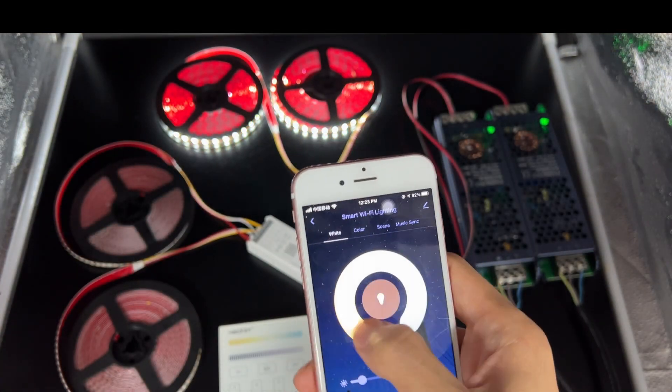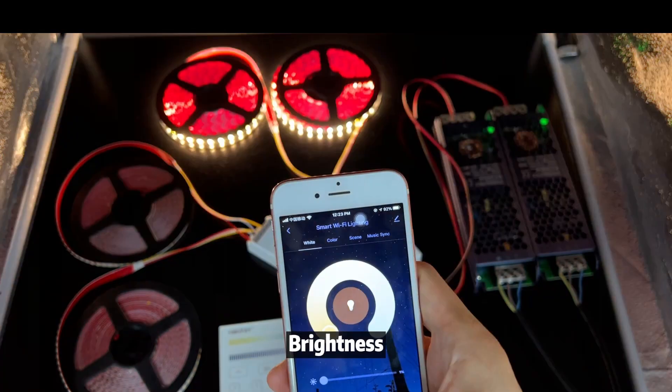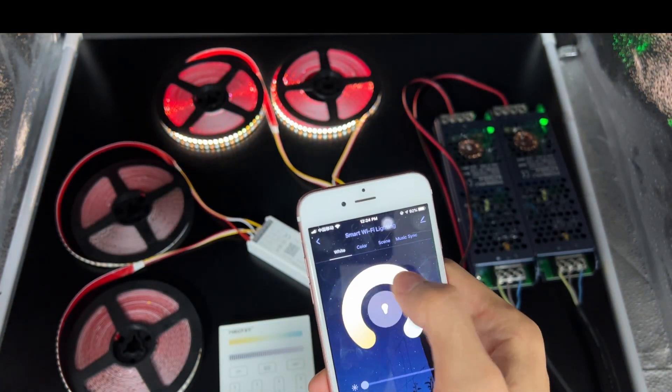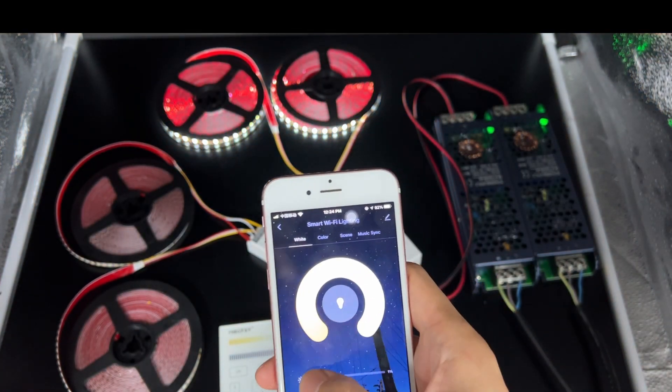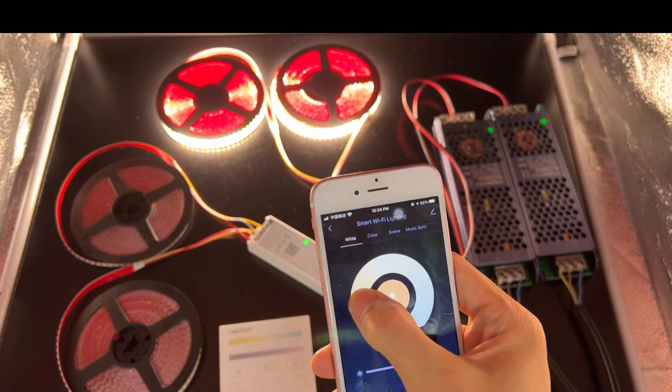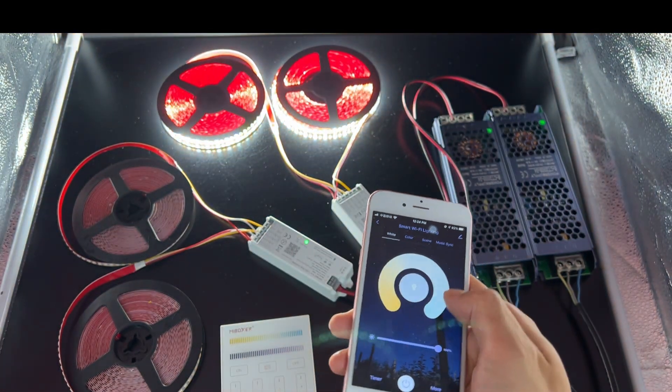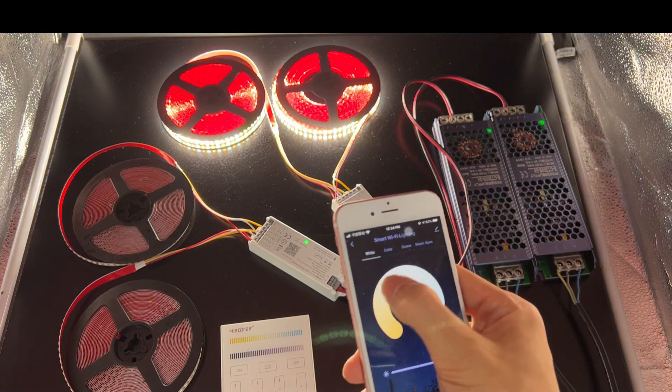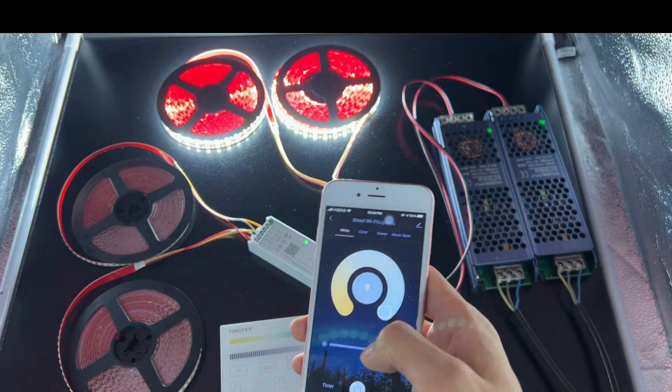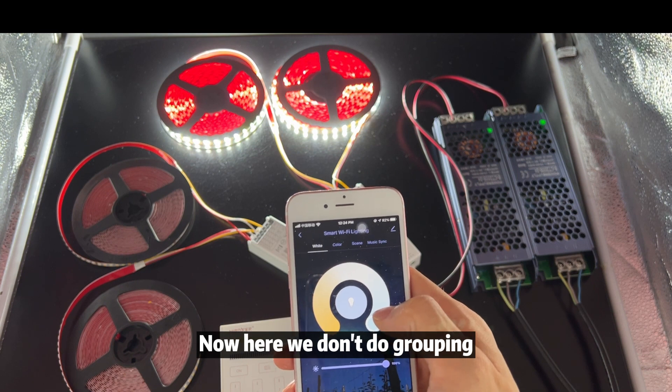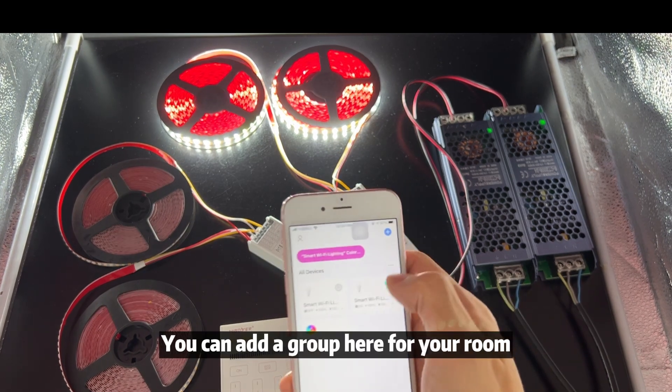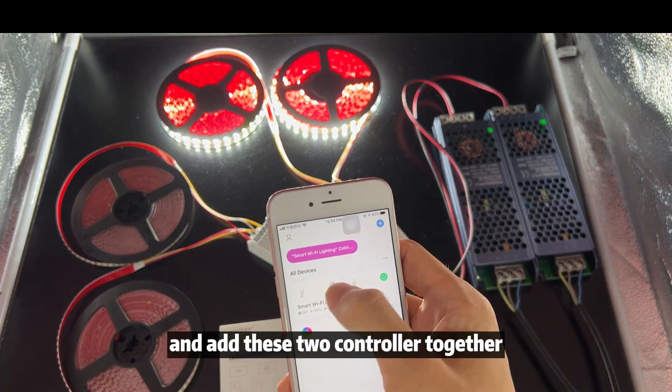This is the second controller. Brightness. Now here we don't do grouping. You can add a group here for your room and add these two controllers together.